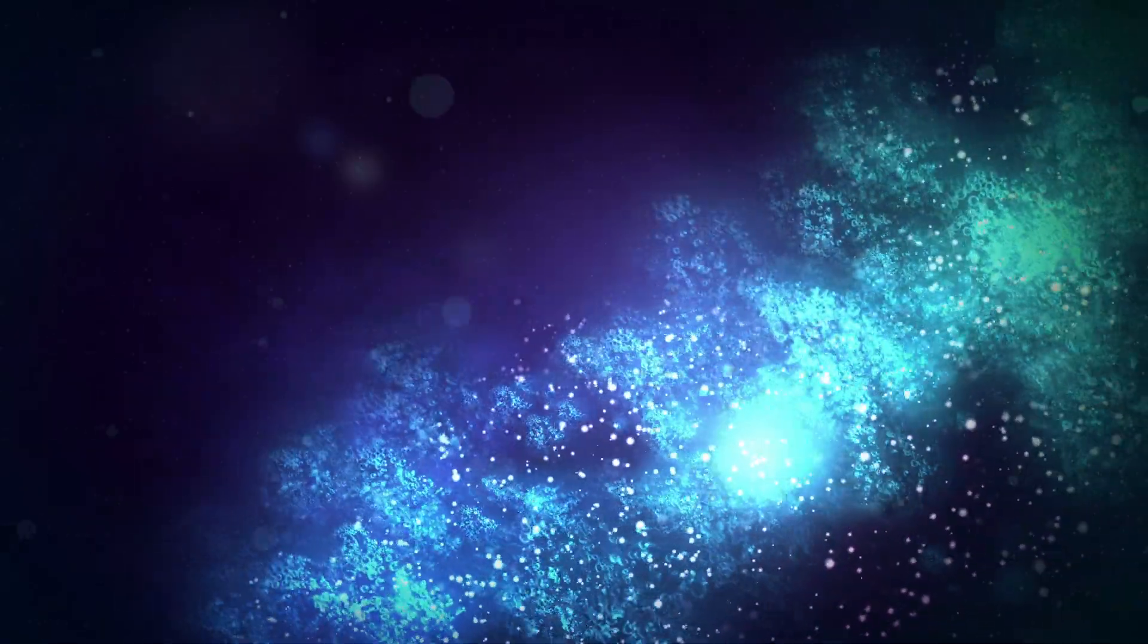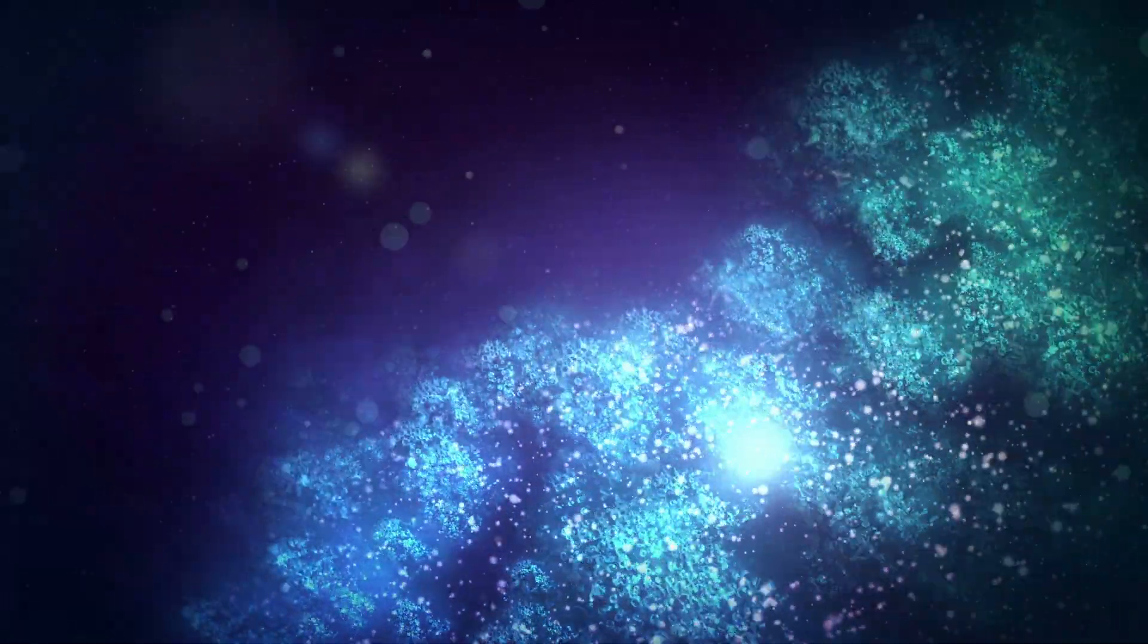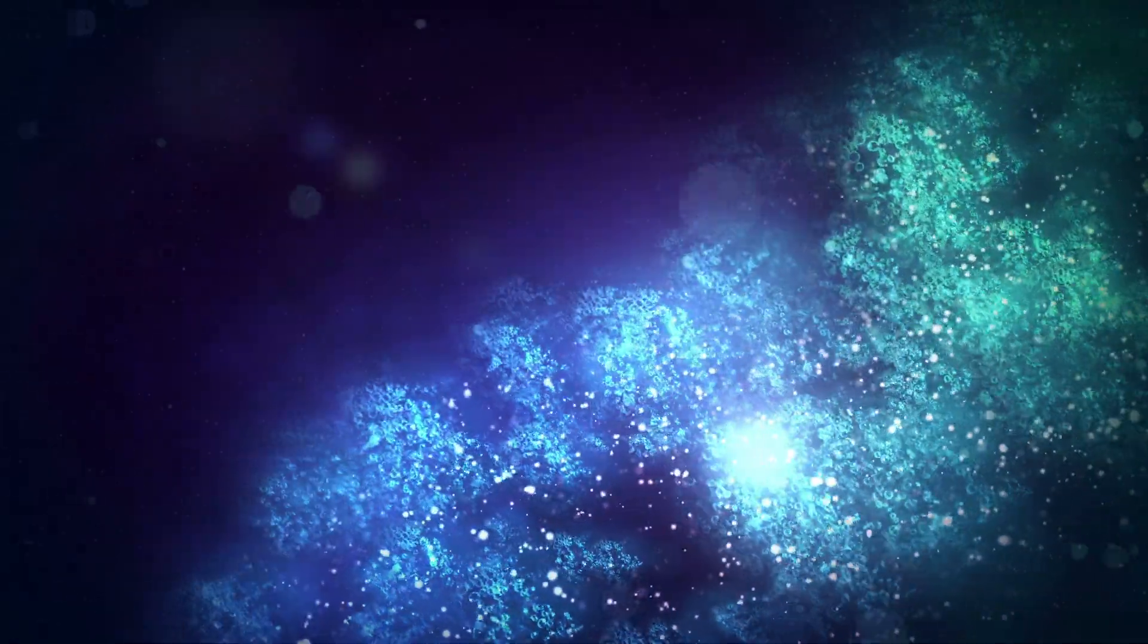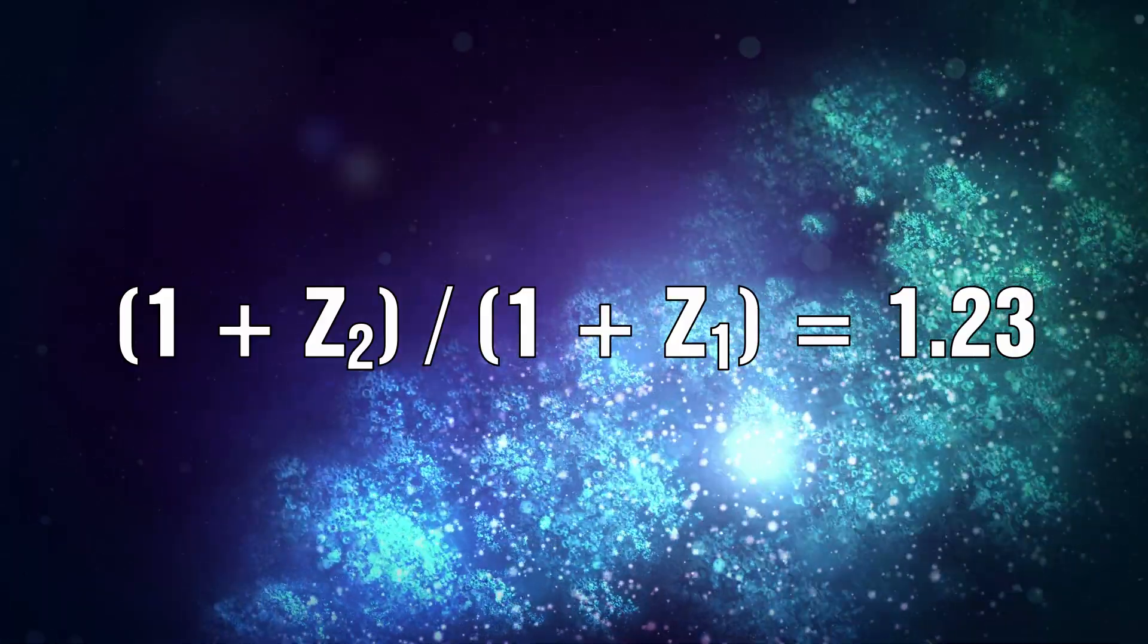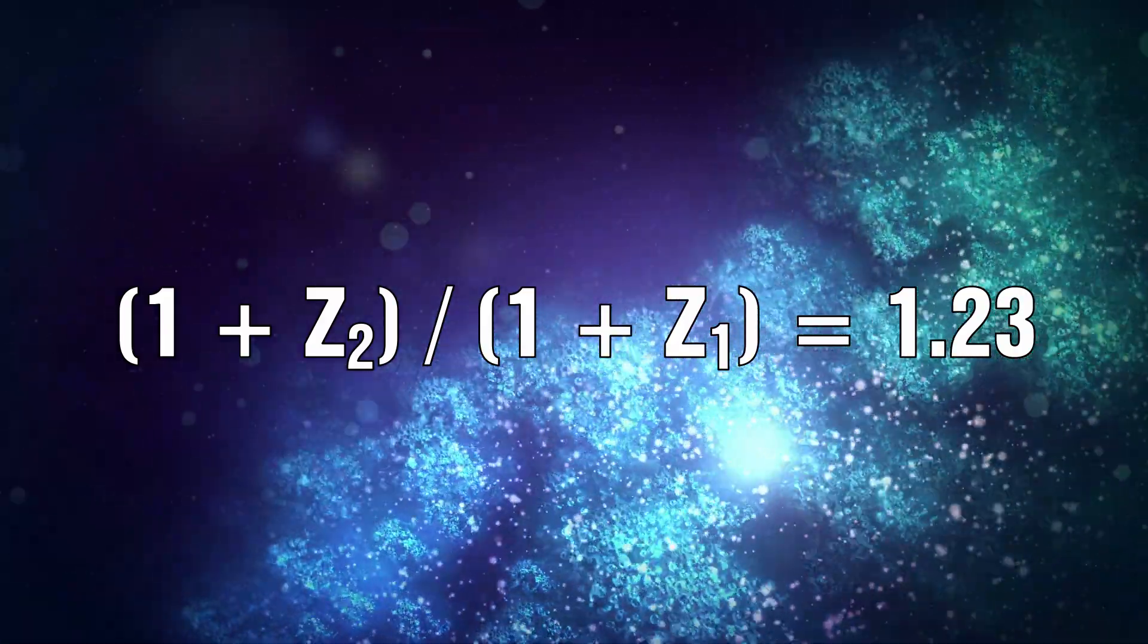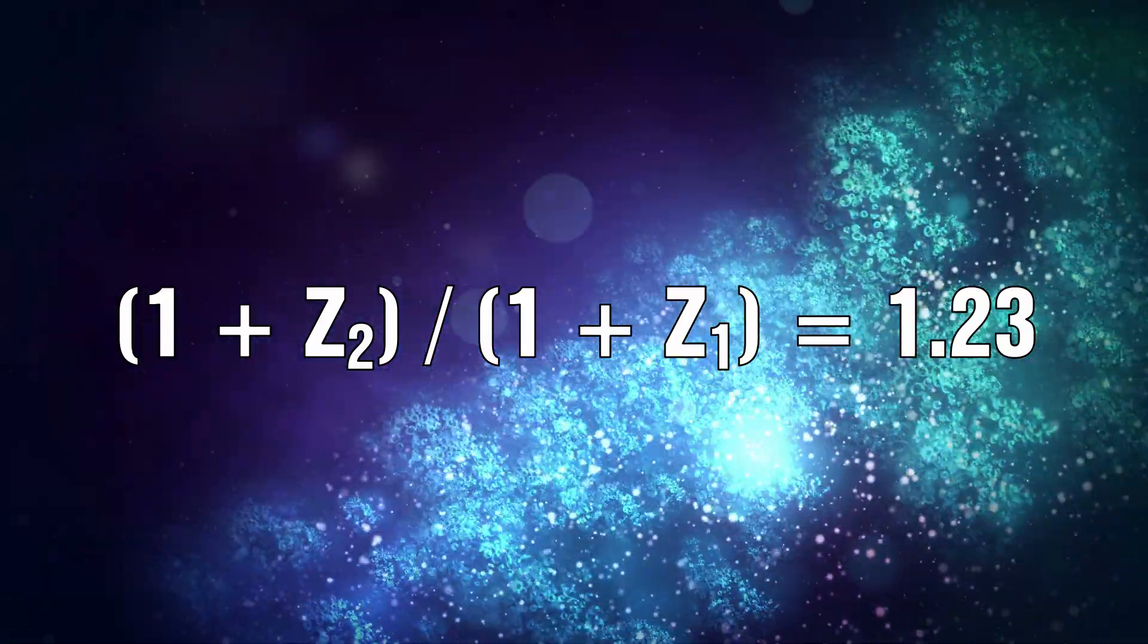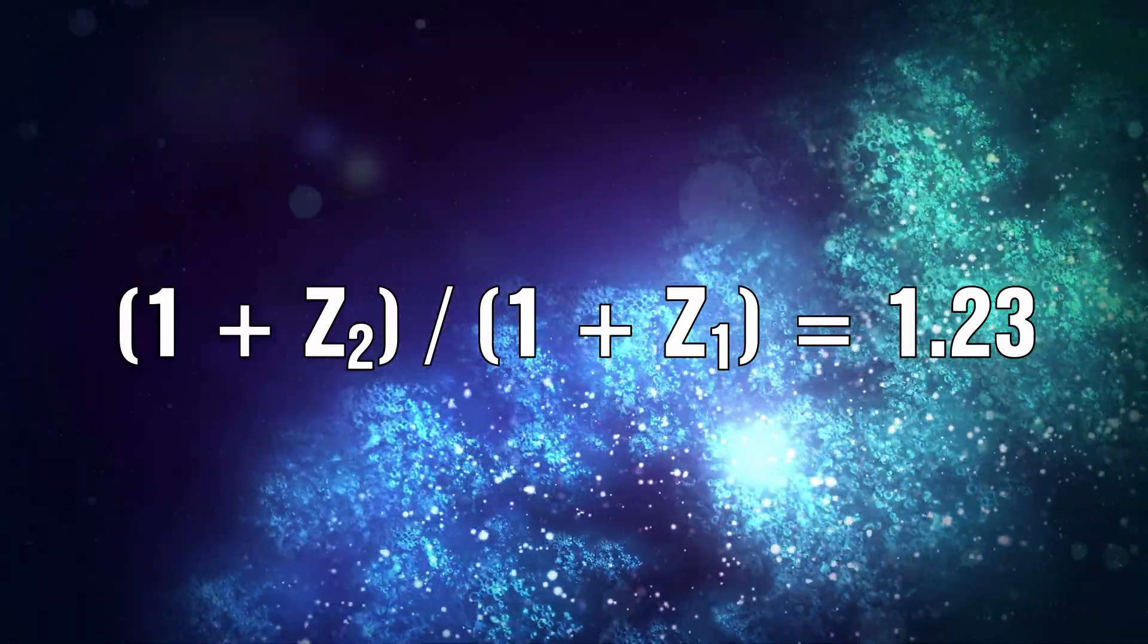In 1967 Geoffrey and Margaret Burbidge had pointed out the existence of some redshifts in quasars which seemed to be preferred. In 1971 KG Carlson showed that these and later observed redshifts obeyed the mathematical formula (1+z2)/(1+z1) = 1.23, where z2 is the next highest redshift from the value z1.